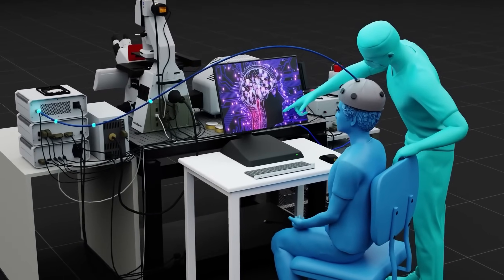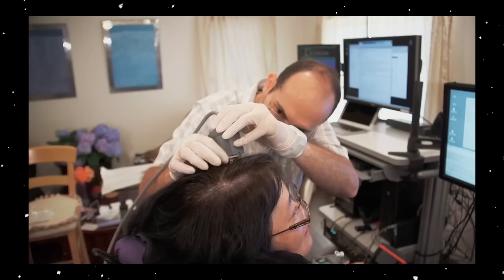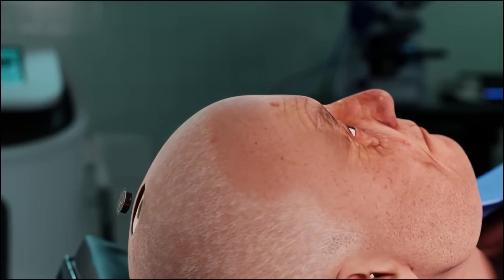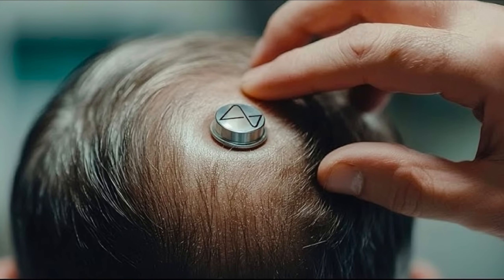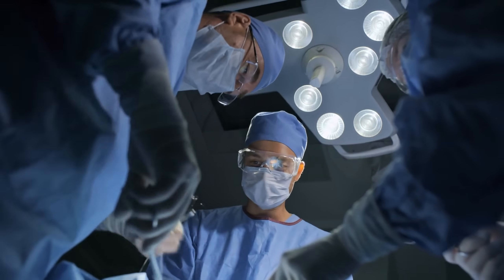After the robot finishes placing the electrodes, a human doctor comes back to place the implant into the skull hole, covers it up, and screws it down to the skull. Then, they sew the skin back together. The whole process takes a few hours.